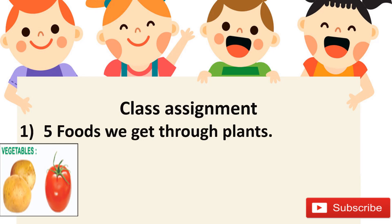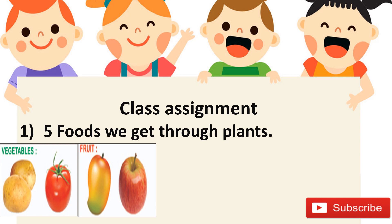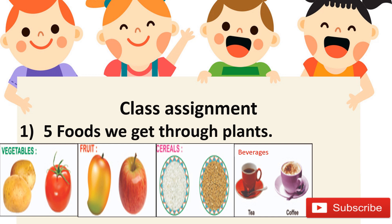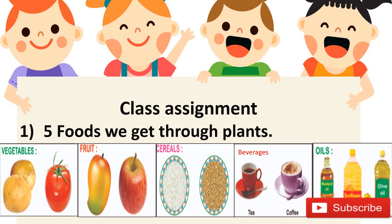Now let's move on to the second class assignment: we have to paste pictures of five foods we get through plants. The first thing we get from plants is vegetables. Right after vegetables, we get fruits from plants. We also get cereals like rice and wheat — jo chawal aur gandum milti hai wo bhi plants se milti hai. We also get beverages like tea and coffee from plants.